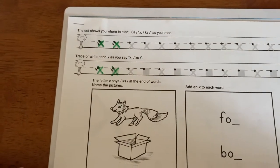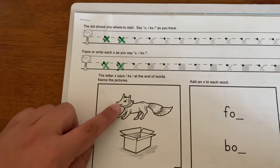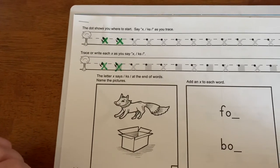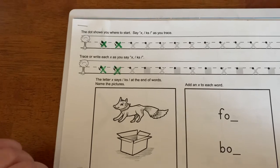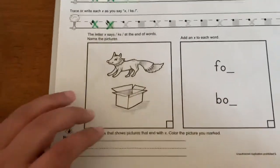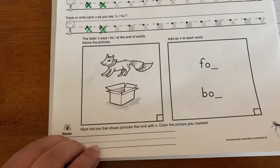You're going to look at the picture. There's a fox and a box. You need to write the word and add an X to those, okay? I'm switching it up on you. So write the word, add the letter that's missing.